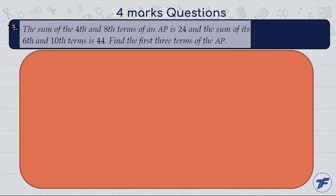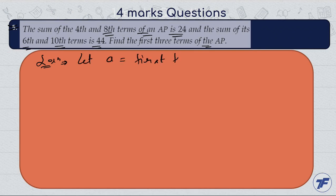Next question: the sum of the fourth and eighth terms of an AP is 24, and the sum of its sixth and tenth terms is 44. Find the first three terms of the AP. Let 'a' be the first term of the given AP and 'd' be the common difference of the given AP.